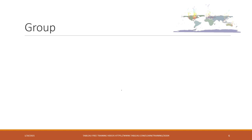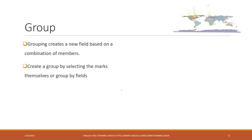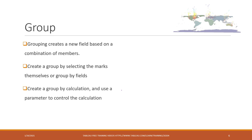Next, let's talk about group. Group is a way that we can create a new field by combining different numbers together. We can create a group by selecting markers, by grouping fields, or we can create a group using a calculation — and when using calculations, we can use a parameter to control the calculation.